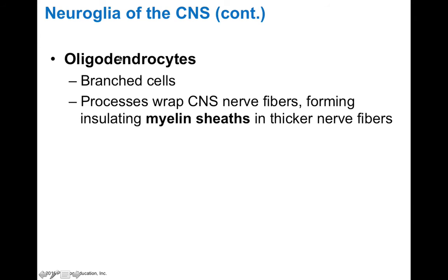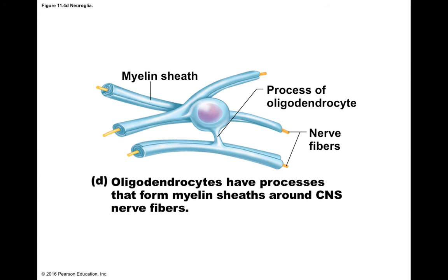Oligodendrocytes are large branched cells that wrap central nervous system nerve fibers. They form an insulating myelin sheath that is thicker than the nerve fibers themselves, and their purpose is to speed up the electrical impulses created by neurons. This myelin sheath looks like the insulation around a wire — the nerve cell processes that conduct electrical currents are like wires, and the myelin sheaths serve as insulation for those wires in the brain.